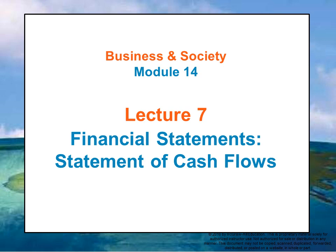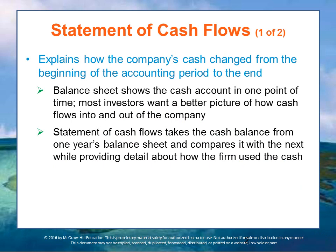Next, we'll talk about the statement of cash flows. The third primary financial statement is called the statement of cash flows, which explains the company's current cash position and how its cash position has changed from the beginning of the accounting period to the end. Cash is an asset shown on the balance sheet, but only the amount of cash at a given point in time. Many investors and other users of financial statements want more information about how cash is flowing into and out of the company in order to get a better idea of the company's financial health.